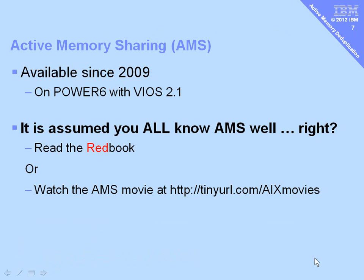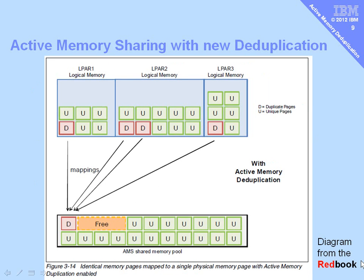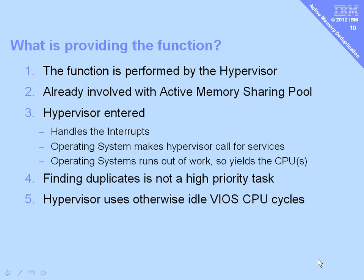We're not going to talk about AMS any further — it's been out for quite a long time, and you may have had hands-on experience with it. If not, go and read the Redbook or watch the AMS movie. With AMS, all the memory pages of our logical partitions are mapped into the memory pages of the shared memory pool. We could look through that pool and identify lots of duplication, but without deduplication there's nothing we can do. With deduplication available, we can change the references to all point to one block in the memory pool, and then free up that memory for better uses. This function is provided by the hypervisor, which is already involved with the active memory sharing pool and controls the page tables that map virtual machine memory into the pool.